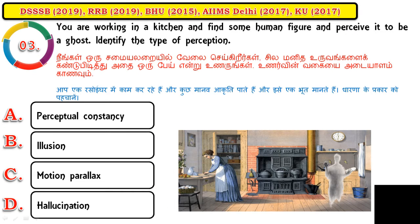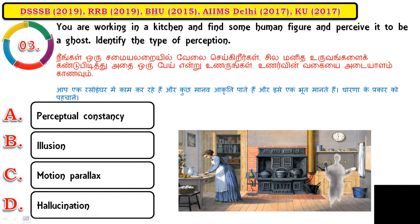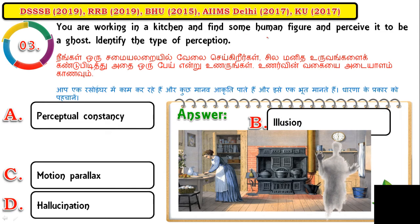Question number three: you are walking in the kitchen and find some human figures and perceive it to be a ghost — identify the type of perception. The correct answer is illusion, because a true human figure was present in the kitchen; the person only misperceived it as a ghost. If no human figure were present and the person still perceived a ghost, that would be hallucination.